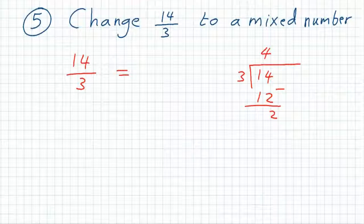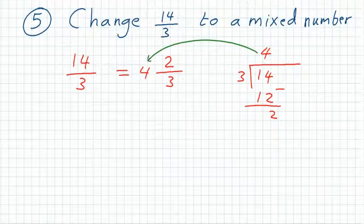Then we can write it as a mixed number, keeping our denominator the same, and putting the result as our whole number beside the fraction, which is 4. And our remainder is the numerator. So this will be 4 and 2 over 3.